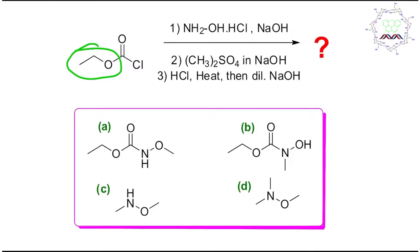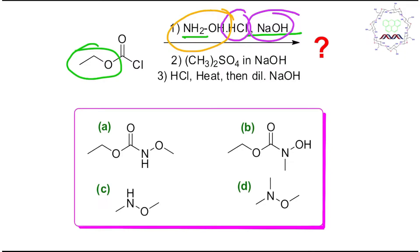Now the first condition is hydroxylamine hydrochloride with sodium hydroxide. This hydroxylamine is provided as a hydrochloride salt, so one equivalent of HCl is added along with hydroxylamine. Sodium hydroxide is given, so the HCl and sodium hydroxide react together and produce sodium chloride and water. It's a simple neutralization reaction to generate free hydroxylamine.